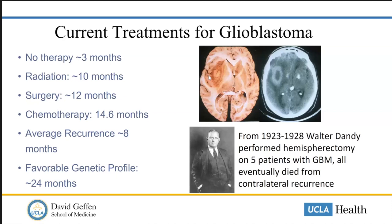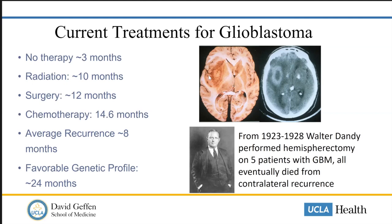One thing we know is that surgery is unfortunately not a cure for this disease. We know that from historical scenarios where, in the 1920s, neurosurgeons like Walter Dandy would perform a hemispherectomy — an anatomic resection of half of their brain — on patients with glioblastoma. Even in those instances, those patients all still eventually succumbed to disease from contralateral recurrence.